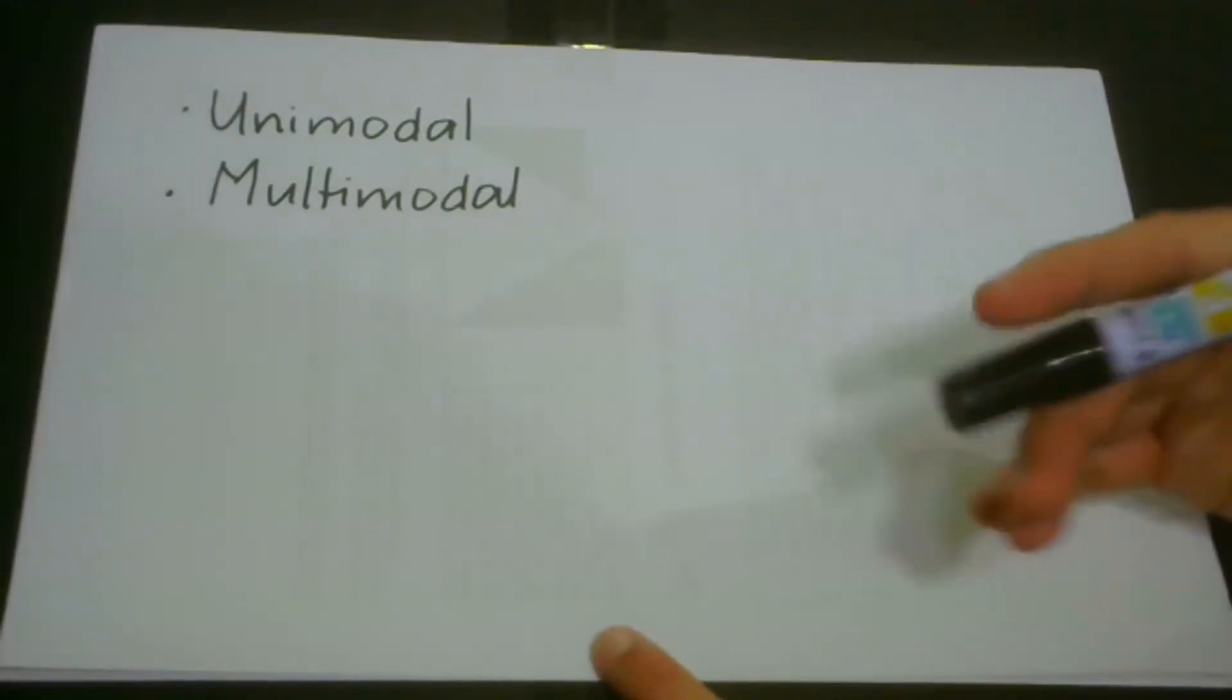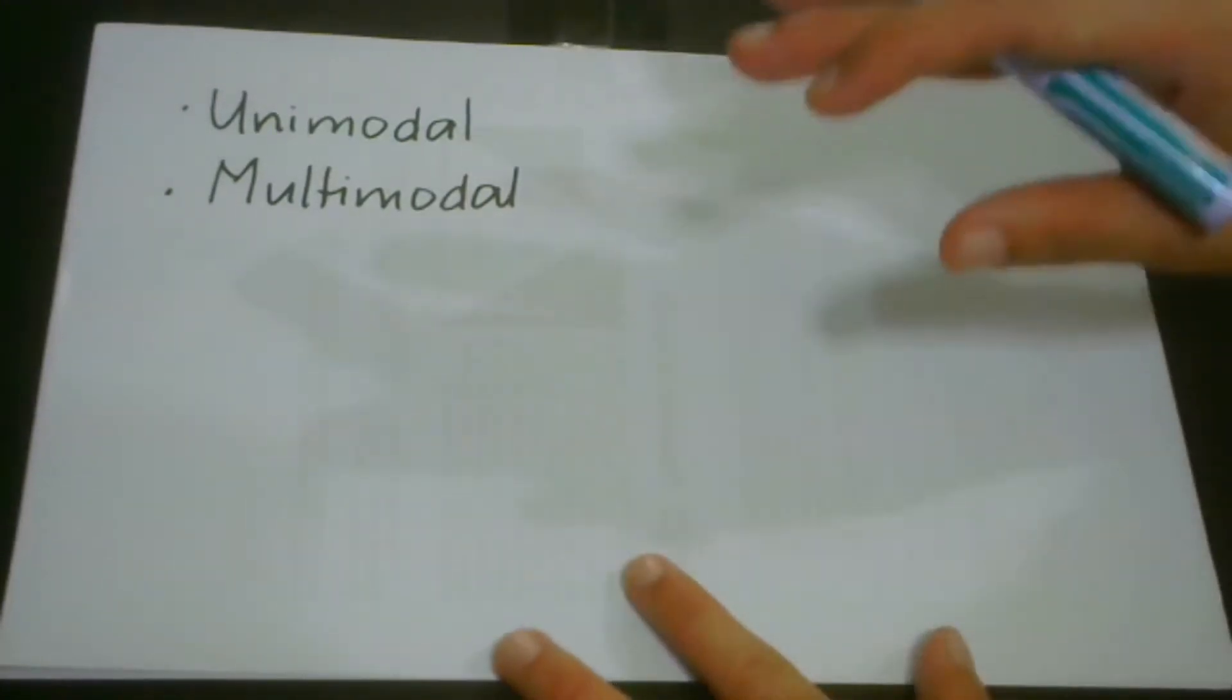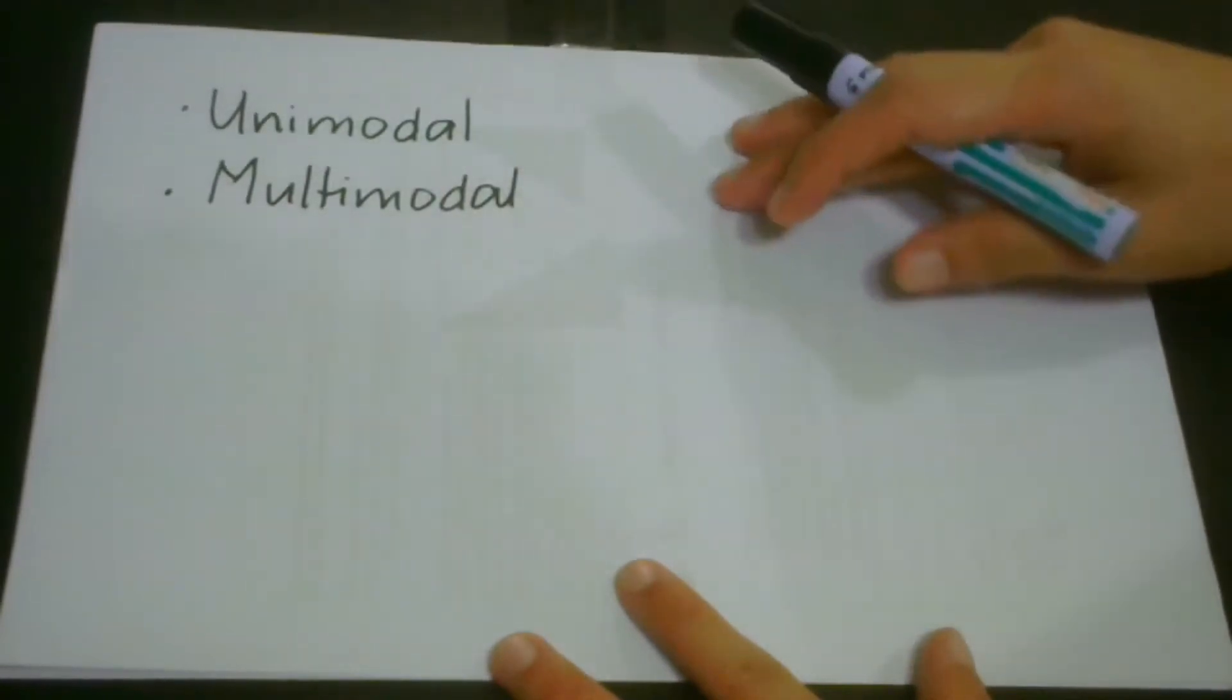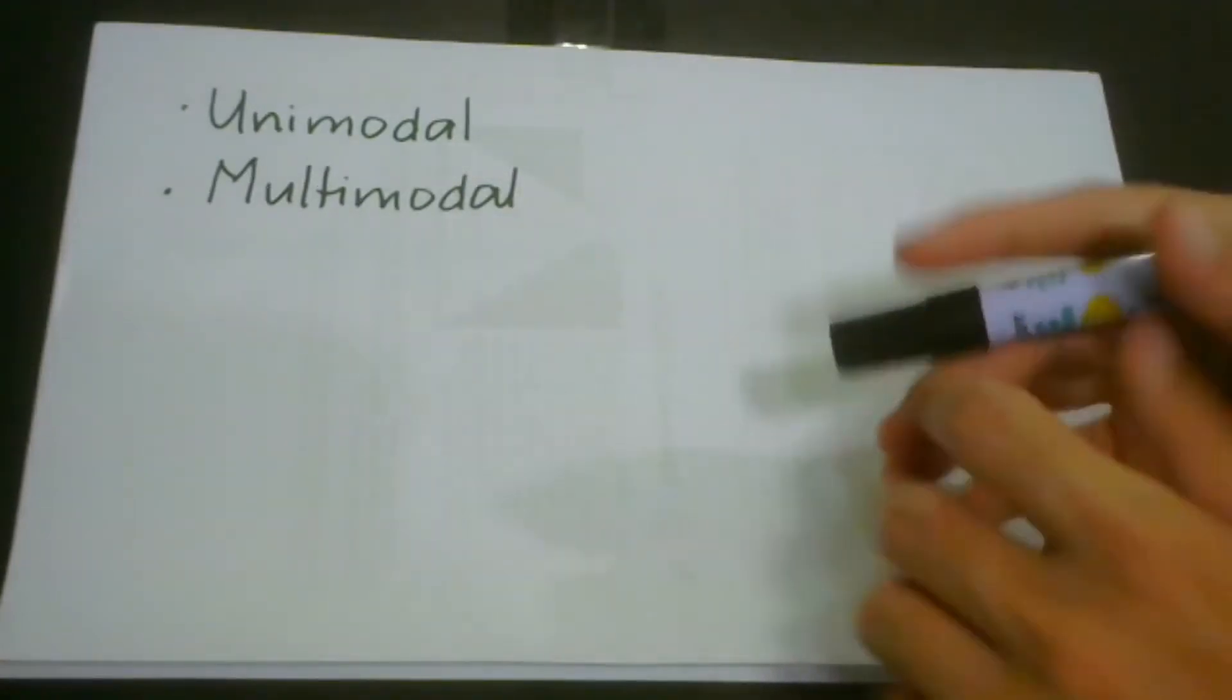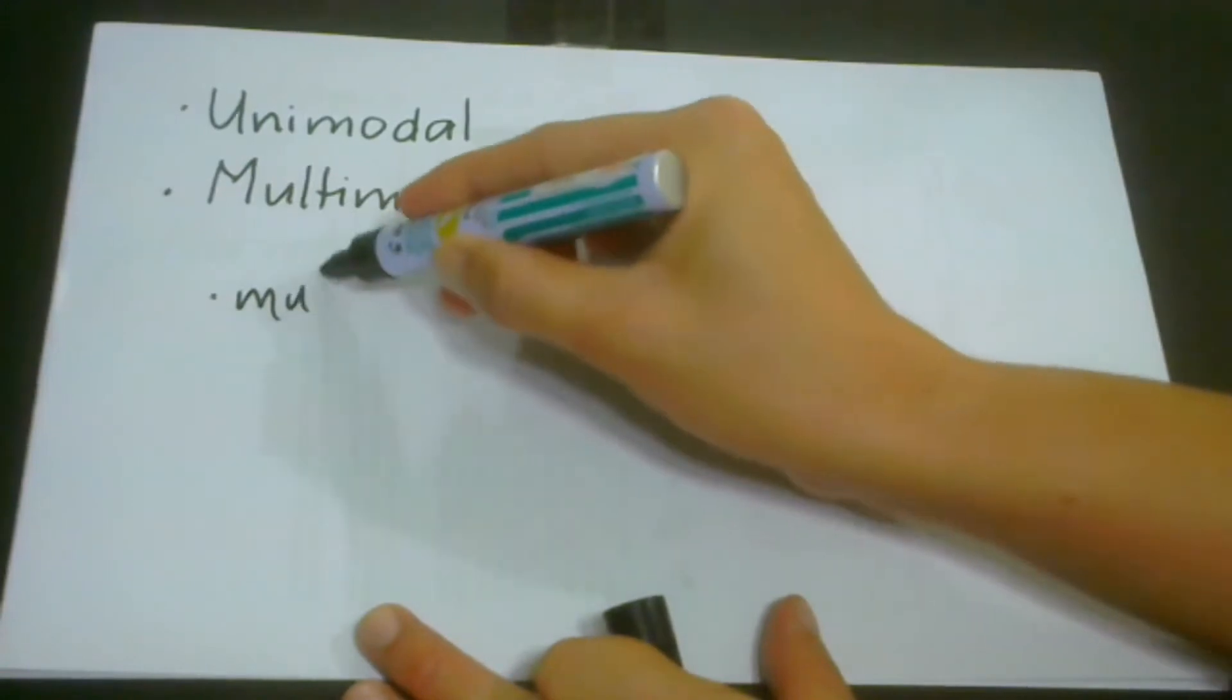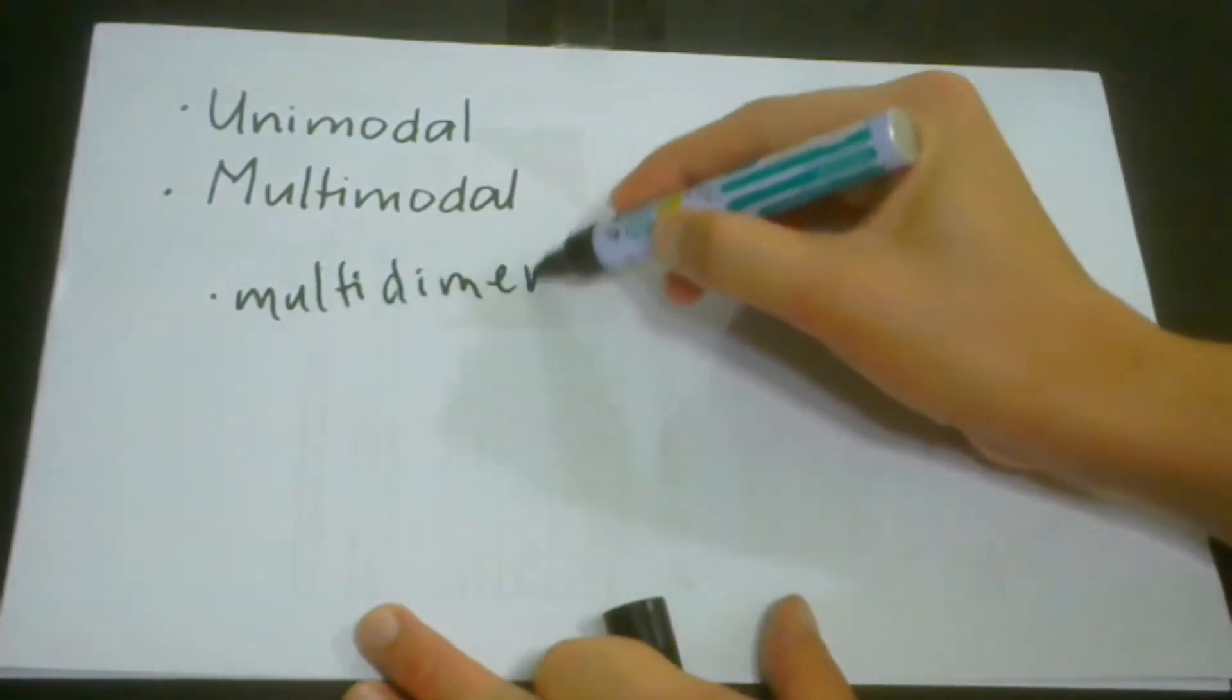In this lesson, we will talk about how to identify outliers in multi-dimensional data. If you remember, we have already talked about unimodal and multimodal data, and we've learned about how to identify outliers in these scenarios. When we talk about multi-dimensional, let me write here: multi-dimensional.